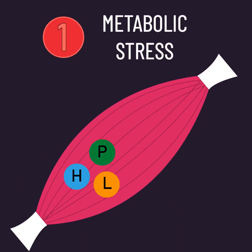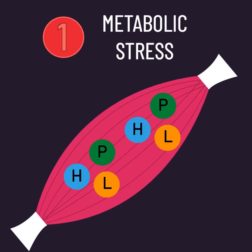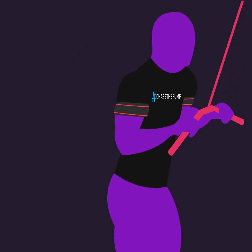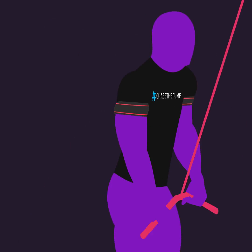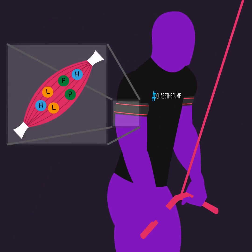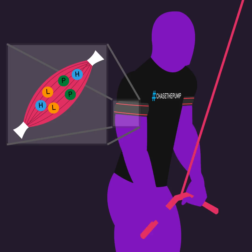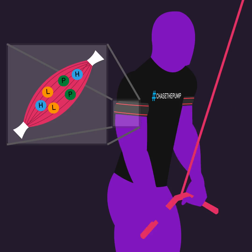Metabolic stress is the build-up of metabolites within the muscle. During exercise, the build-up of metabolites can occur due to chemical reactions involved in energy production.